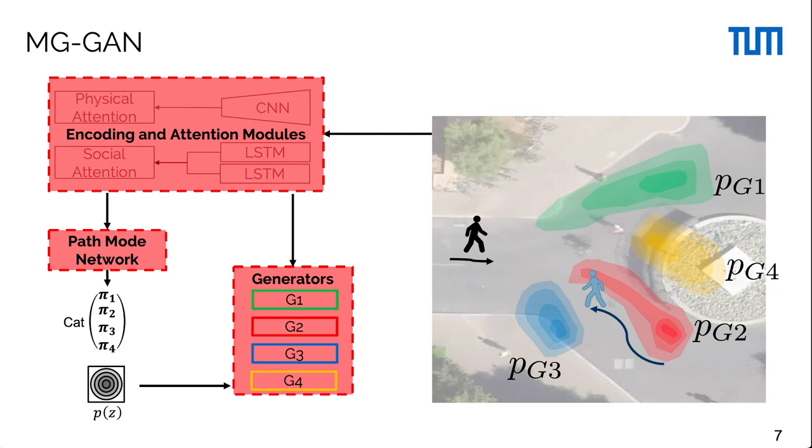To select the appropriate generators, we pass the features to the path mode network that estimates a distribution over the generators. Then, we can sample different generators from this distribution and predict multimodal trajectories.